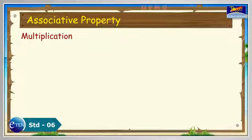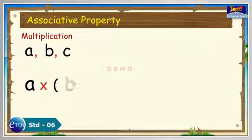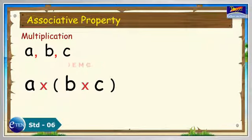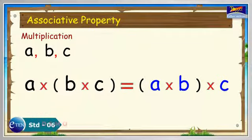Thus, for any 3 whole numbers a, b, and c: a × (b × c) = (a × b) × c.